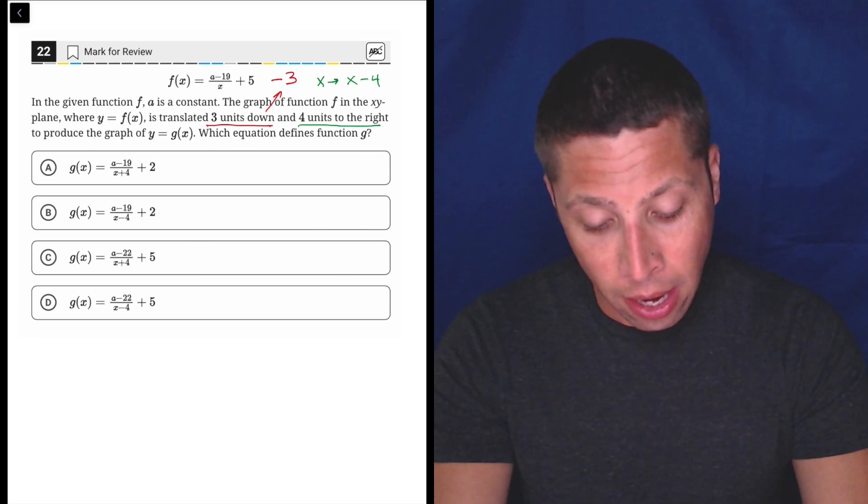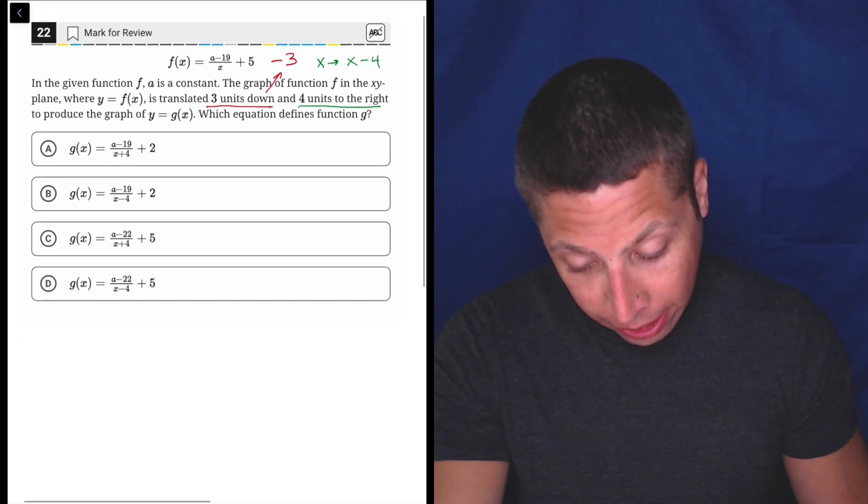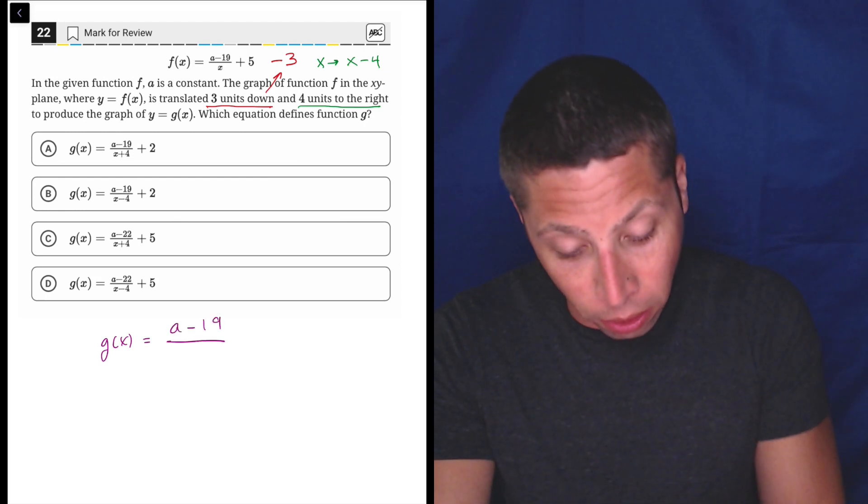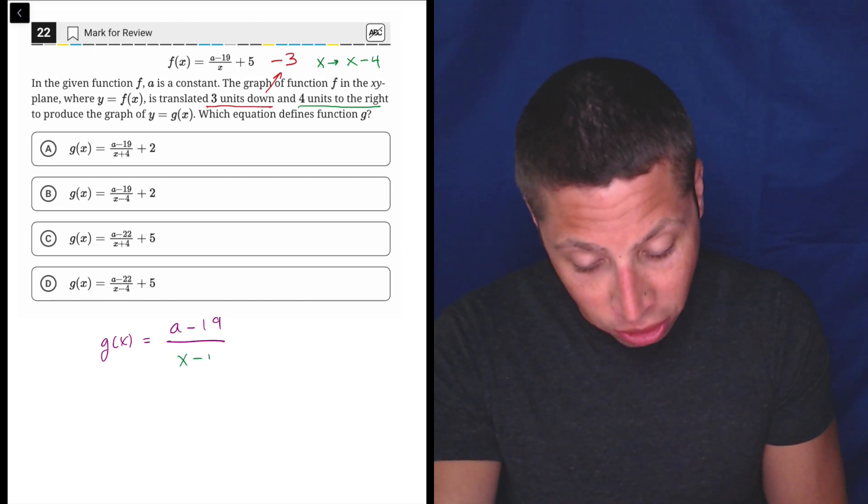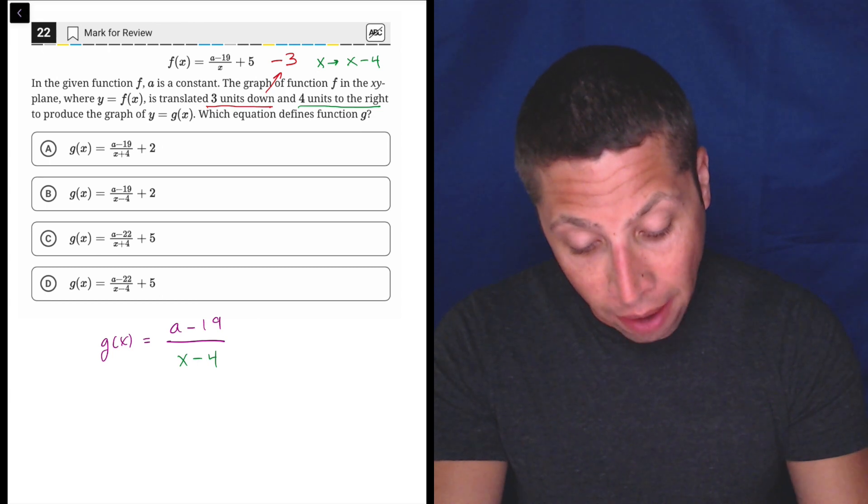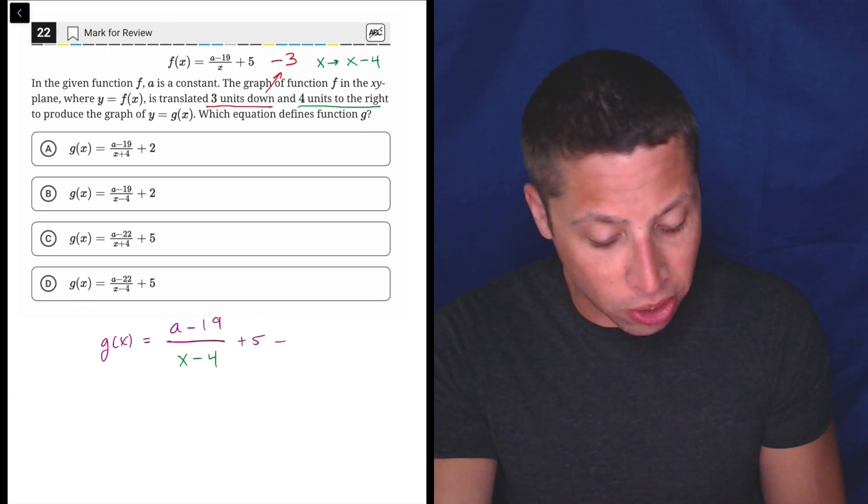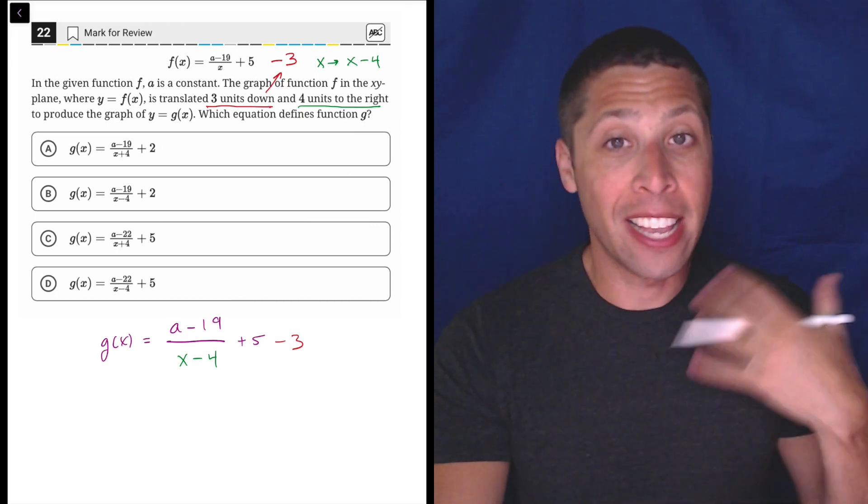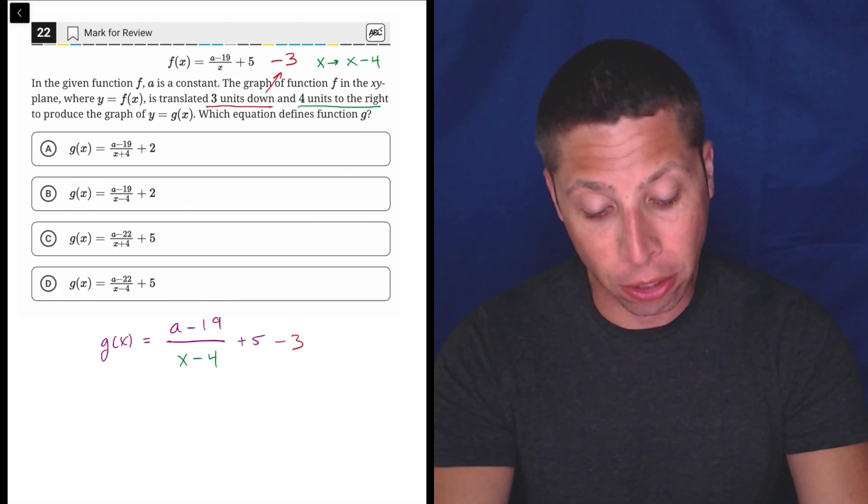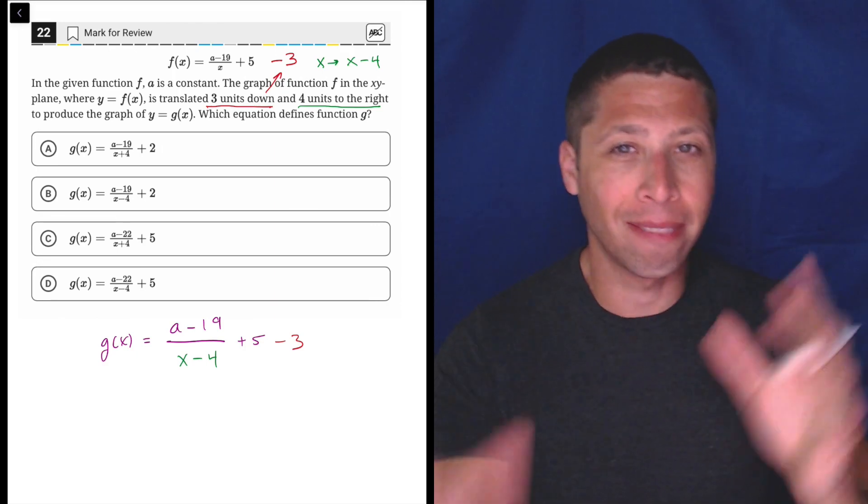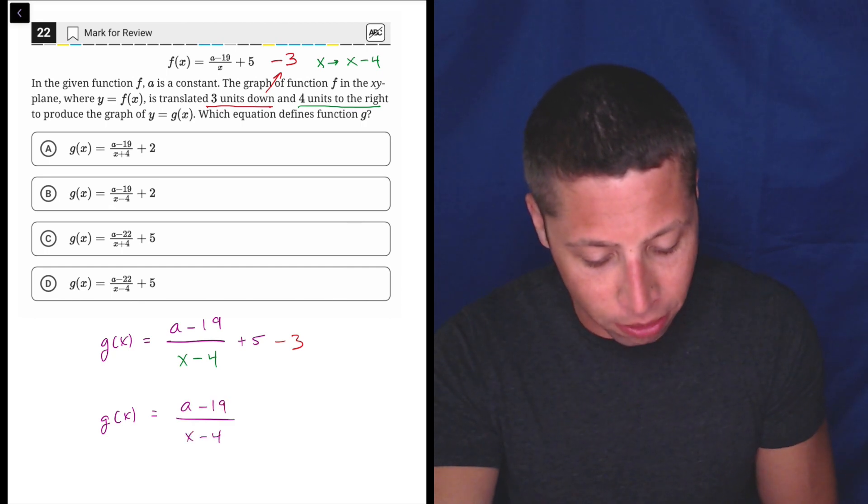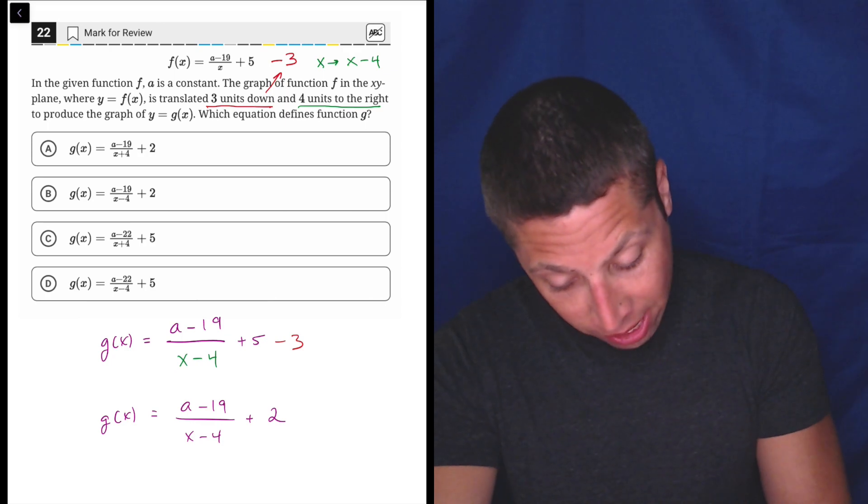So if we wanted to do just a very quick version of the g of x graph, it would basically look like this. We would do g of x is equal to a minus 19, that's not going to change, over, and then here we would do the substitution, x minus four, so that's just going to go in place of x. And then we'd still have that plus five, I'll simplify this in a second. And then the minus three, we just kind of add on to the end. So this is the kind of intermediate step where we're incorporating the translations, but we're not actually simplifying yet. In some cases, the x minus four is going to require some extra work, but in this case, since there's only one x, it's not really getting touched by any other numbers or exponents or anything. It's just going to stay put, so our final g of x graph is really just simplifying those end numbers. A minus 19 over x minus four plus two, which is choice B.